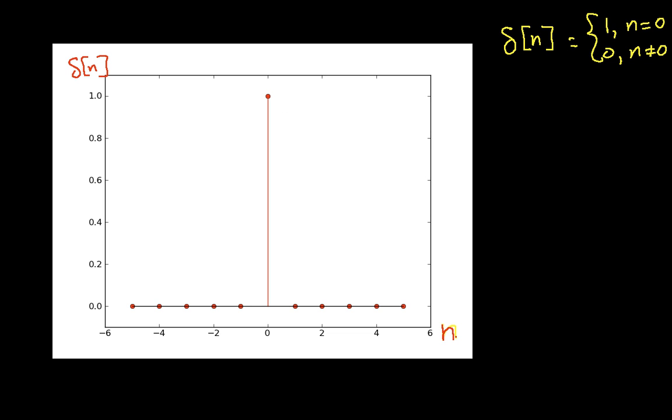So, you can see here that we have a value of 1 when n is equal to 0, and we have values of 0 for everything else.